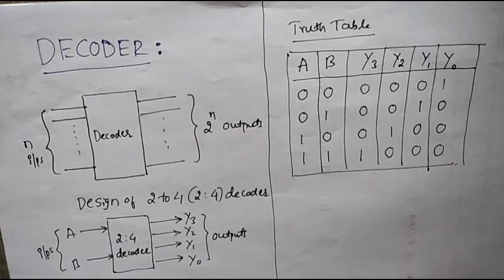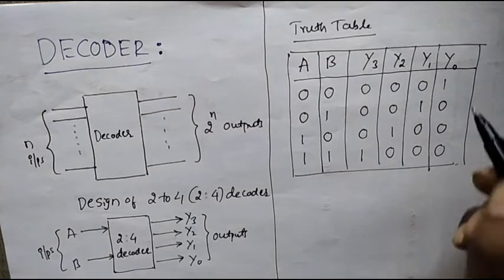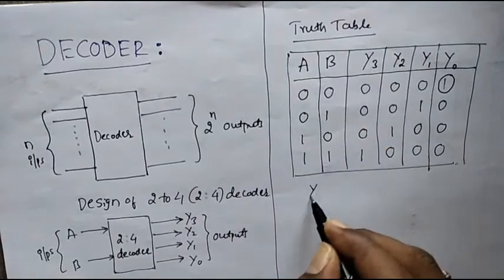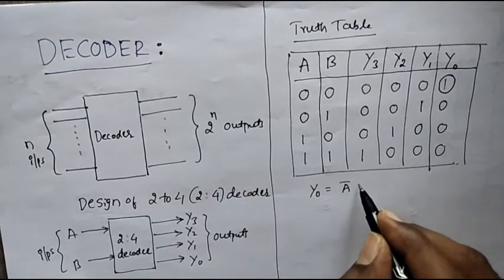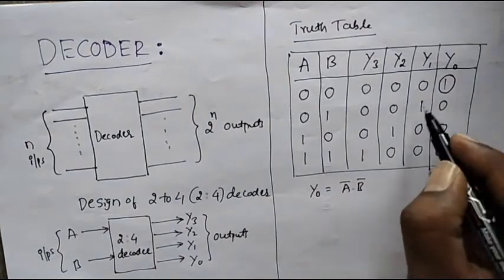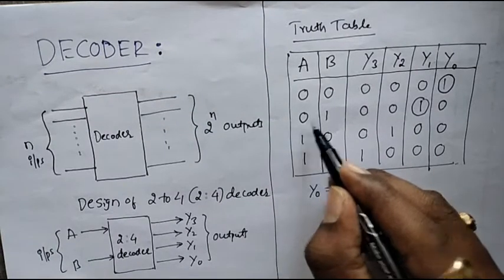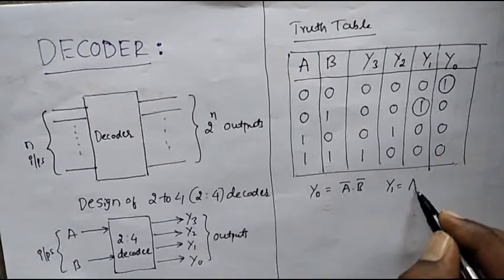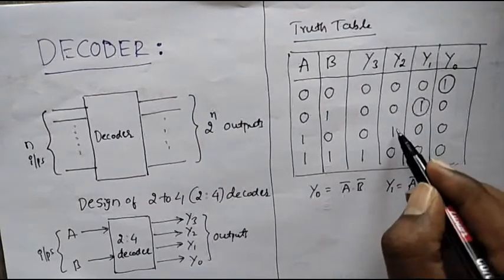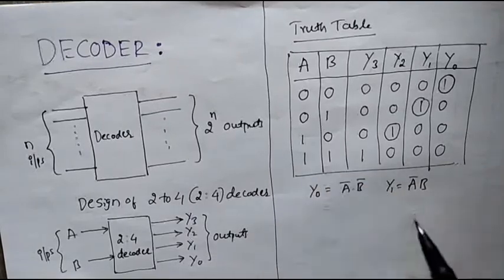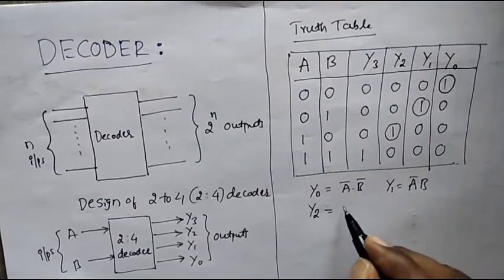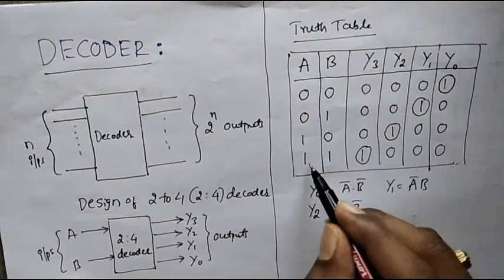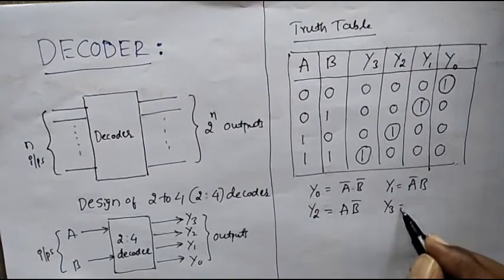Now let us write the Boolean expression for each output. Y0 is high for inputs A equal to 0 and B equal to 0, therefore Y0 = A̅·B̅. Y1 is high for inputs A equal to 0 and B equal to 1, therefore Y1 = A̅·B. Y2 is high for inputs A equal to 1 and B equal to 0, therefore Y2 = A·B̅. Y3 is high for A equal to 1 and B equal to 1, therefore Y3 = A·B.